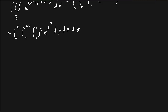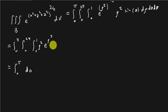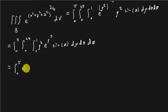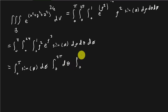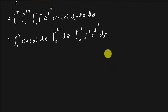It looks like a big mess to integrate, but look at the bounds — we can actually split this up by a property. Correcting myself: I left off sinφ. So that gives us ∫₀^π sinφ dφ · ∫₀^(2π) dθ · ∫₀^1 ρ² e^(ρ³) dρ. We can split them up and multiply them together; we have a property that says we can do that.